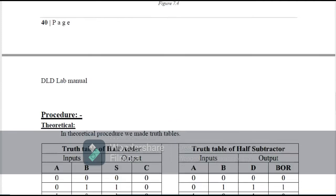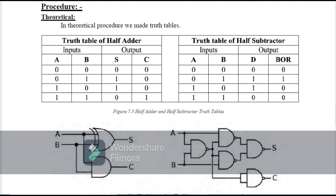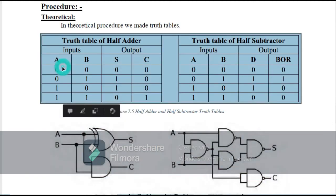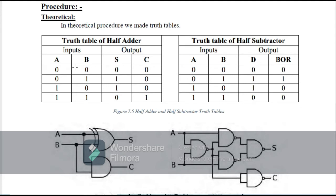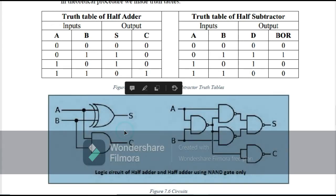By using this truth table we are going to design the circuits of half adder and half subtractor. Here you can see the truth table of the half adder and half subtractor. For the half adder we have two inputs A and B and two outputs sum and carry. When inputs are 0,0 sum is 0 and carry is 0; inputs 0,1 sum is 1 carry is 0; inputs 1,0 sum is 1 carry is 0; inputs 1,1 sum is 0 carry is 1.